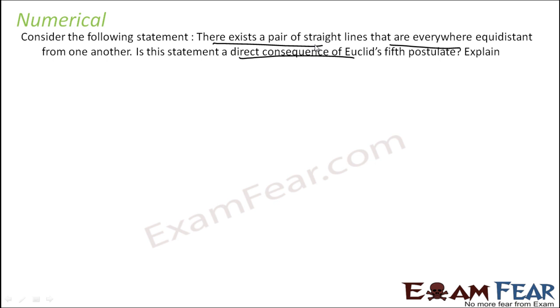Yes. Let's say there exists a pair of straight lines that are everywhere equidistant from one another. That means if these are parallel, then they are always equidistant. The question is, this is the statement: if L is parallel to M, then let's put this one AB and C, then AB is equal to C.